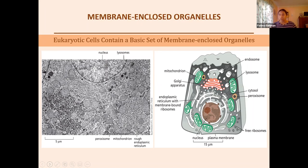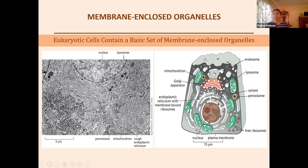As cells enlarged in size in eukaryotic cells, they can no longer maintain all functions through the plasma membrane alone. Many times these cells are up to 10,000 times greater in size. Because of that, there was a need to create internal membrane structures that can provide extra surface area to cover the needs of the cell.